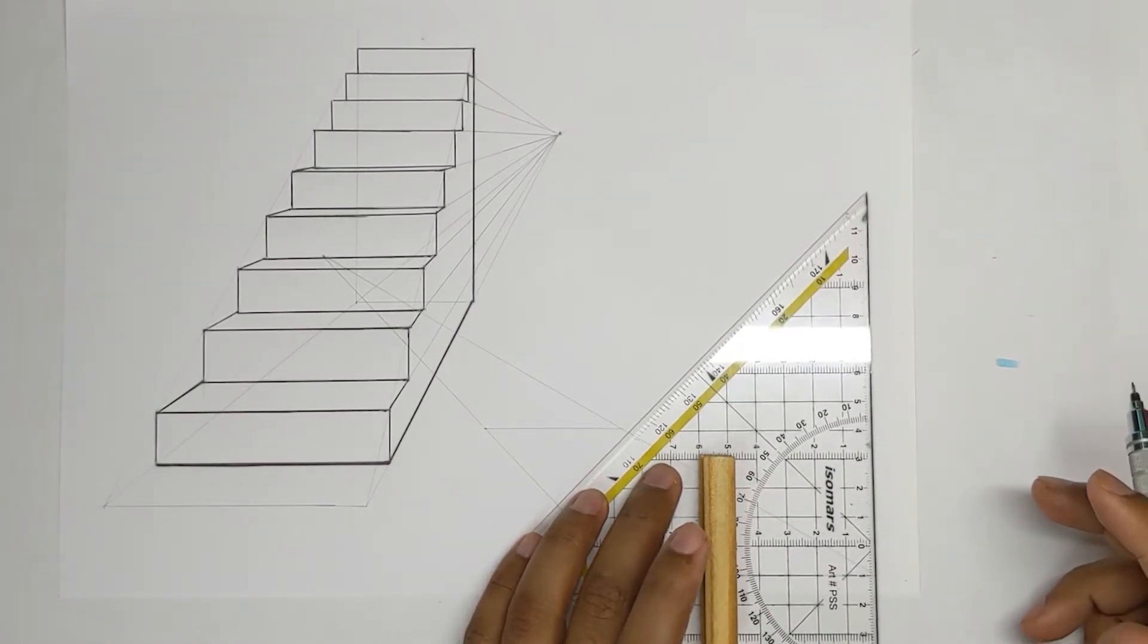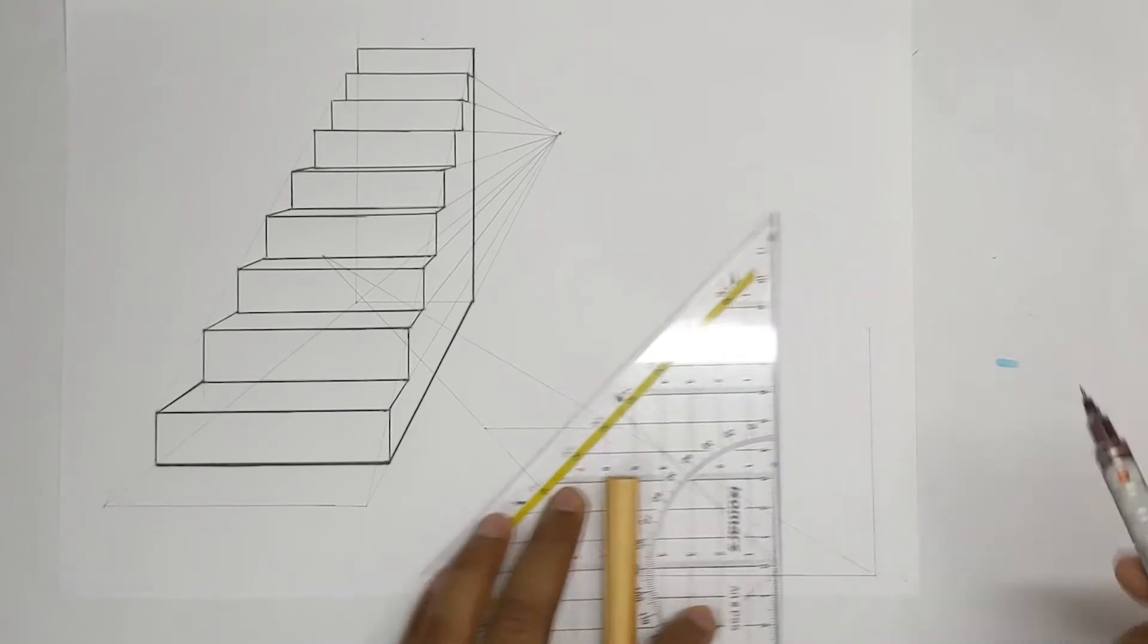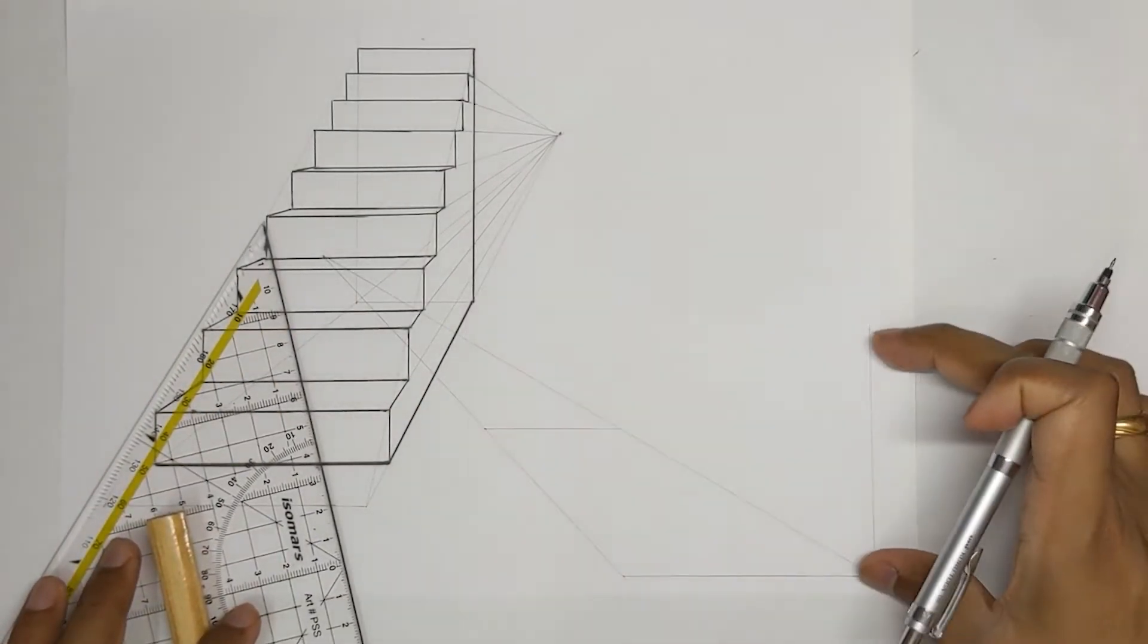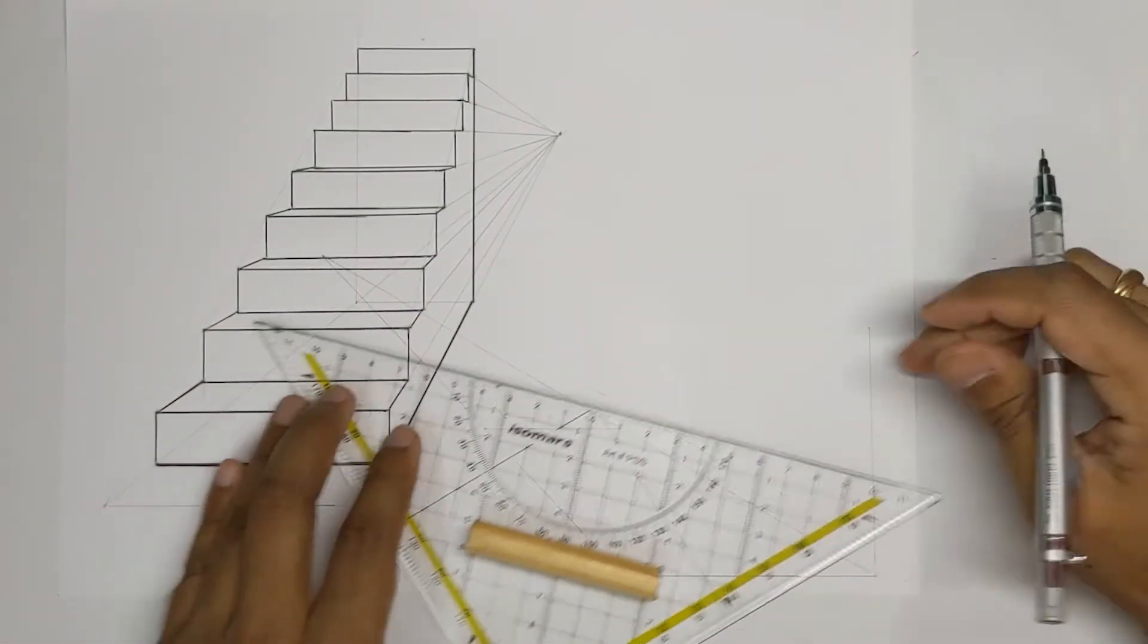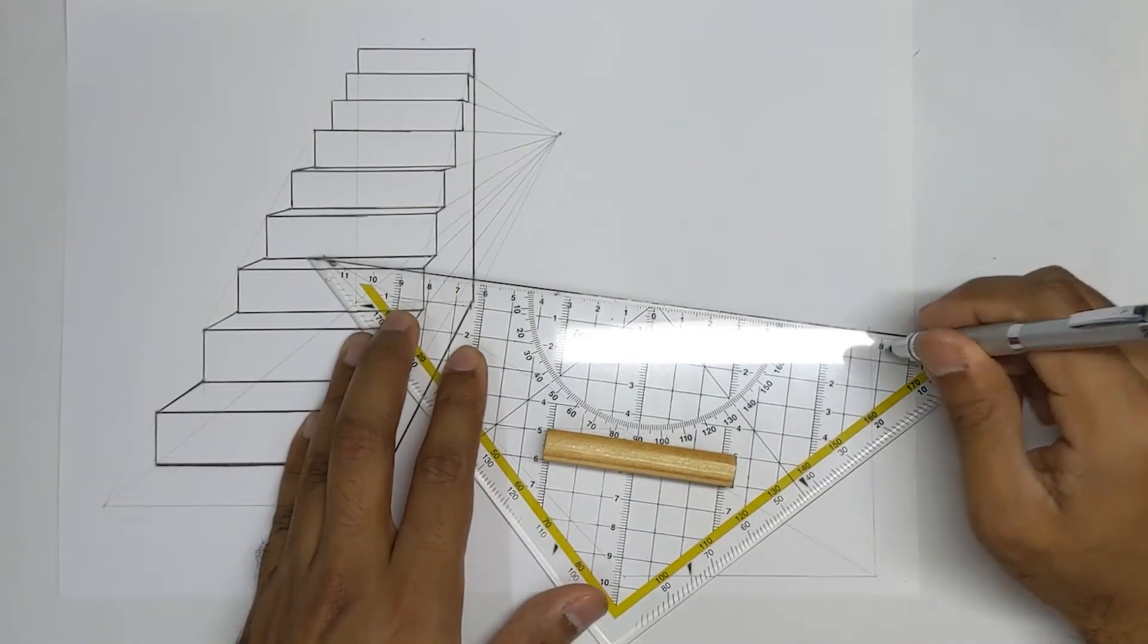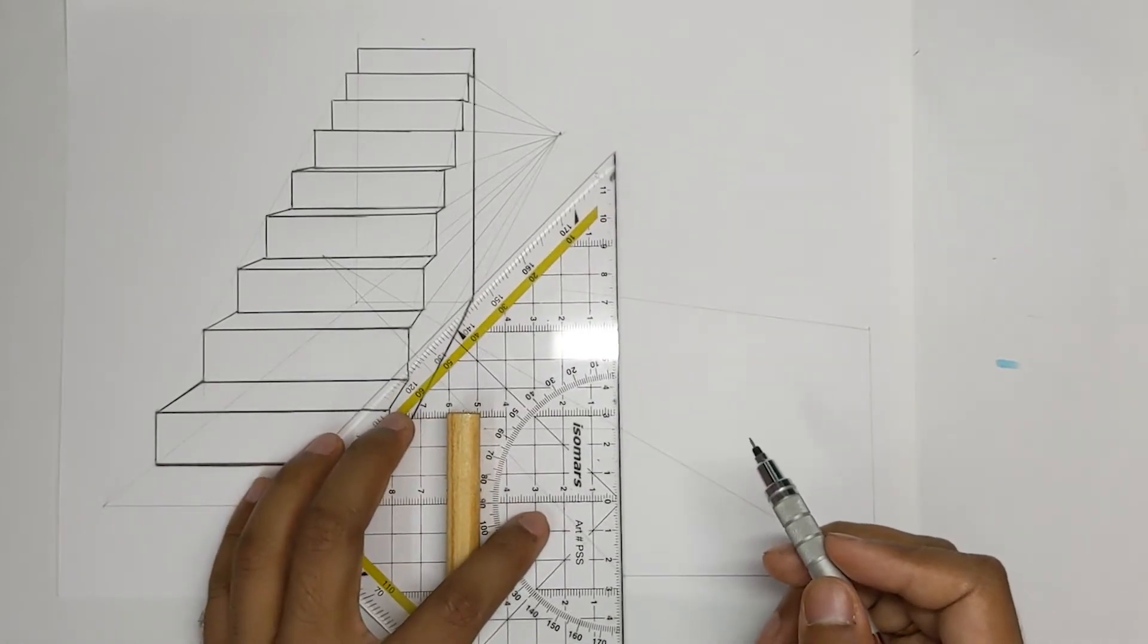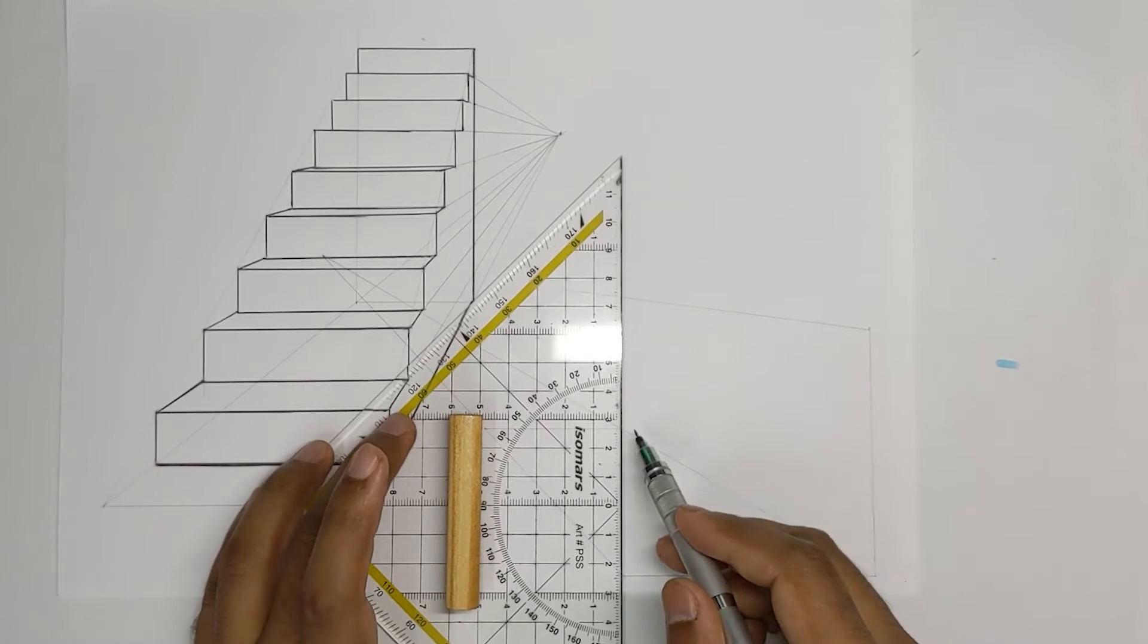So here is where you will decide how high your stairs should be. So my stairs should be of this height. And from this point just connect again to the vanishing point and take this point here and draw a vertical line.